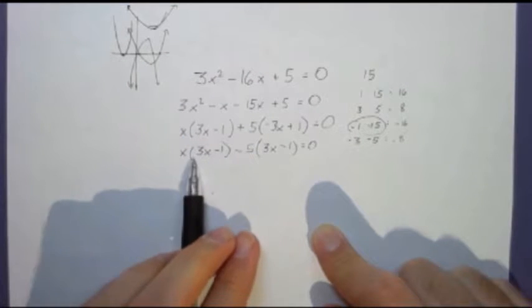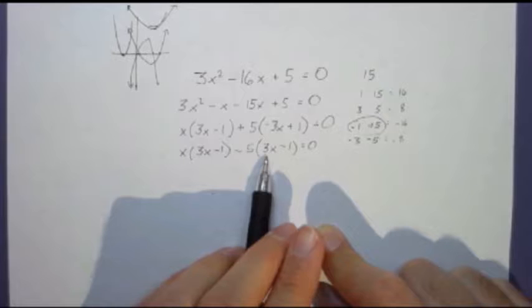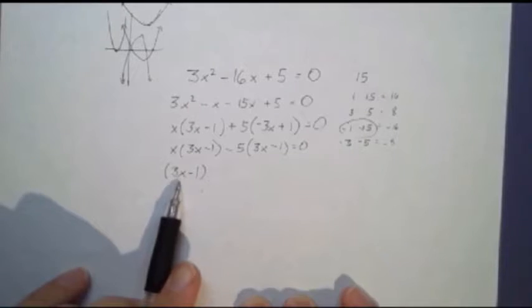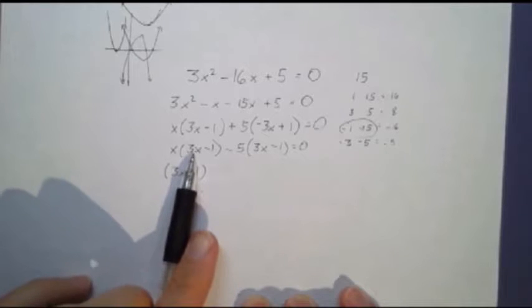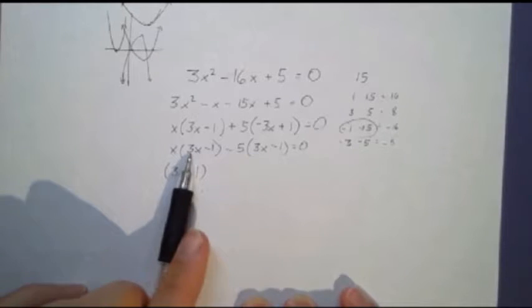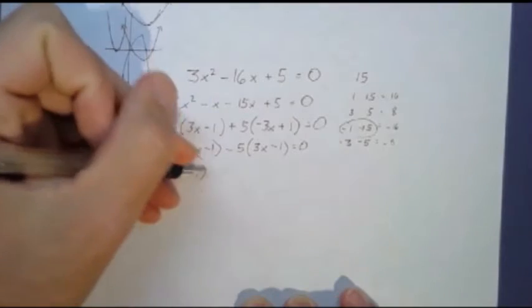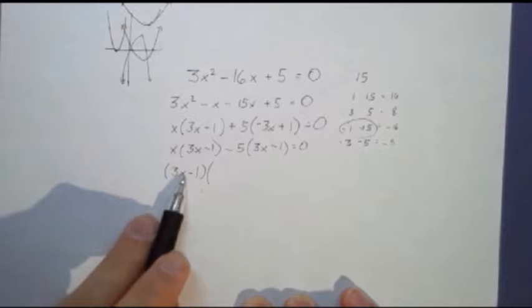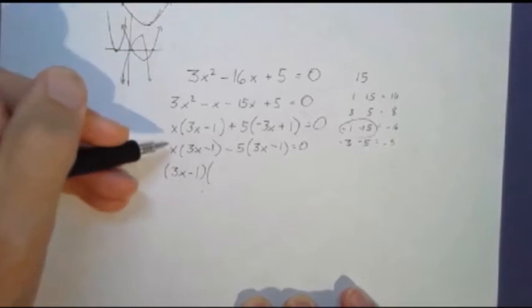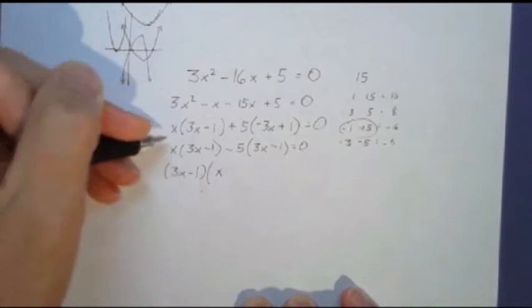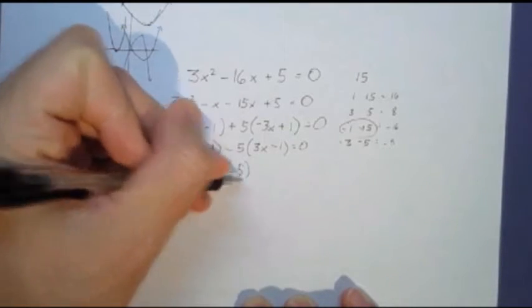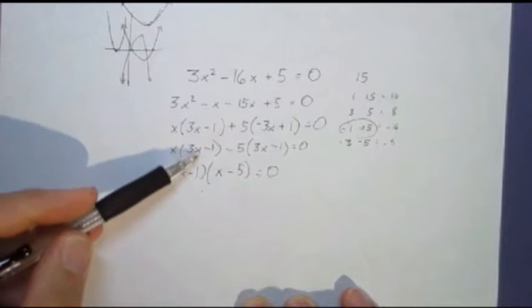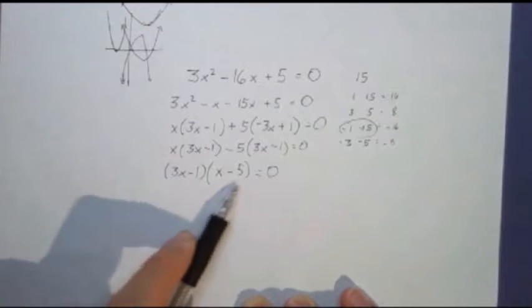Now, these factors match. When factors match, you can factor them out. Three x minus one is a common factor to both of these terms. If I divide each by three x minus one, what's left here is an x, and what's left here is a negative five. So now my quadratic is factored into three x minus one and x minus five.